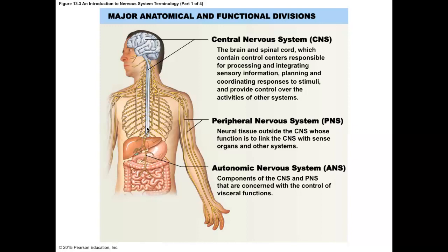The peripheral nervous system includes cranial nerves and spinal nerves. Cranial nerves come off the brain itself and go to your head, neck, and one of them goes down into your abdomen and thorax. Spinal nerves are the nerves that come off your spinal cord. We'll talk about spinal nerves in the spinal cord chapter, which is chapter 14, and cranial nerves are covered in chapter 16.